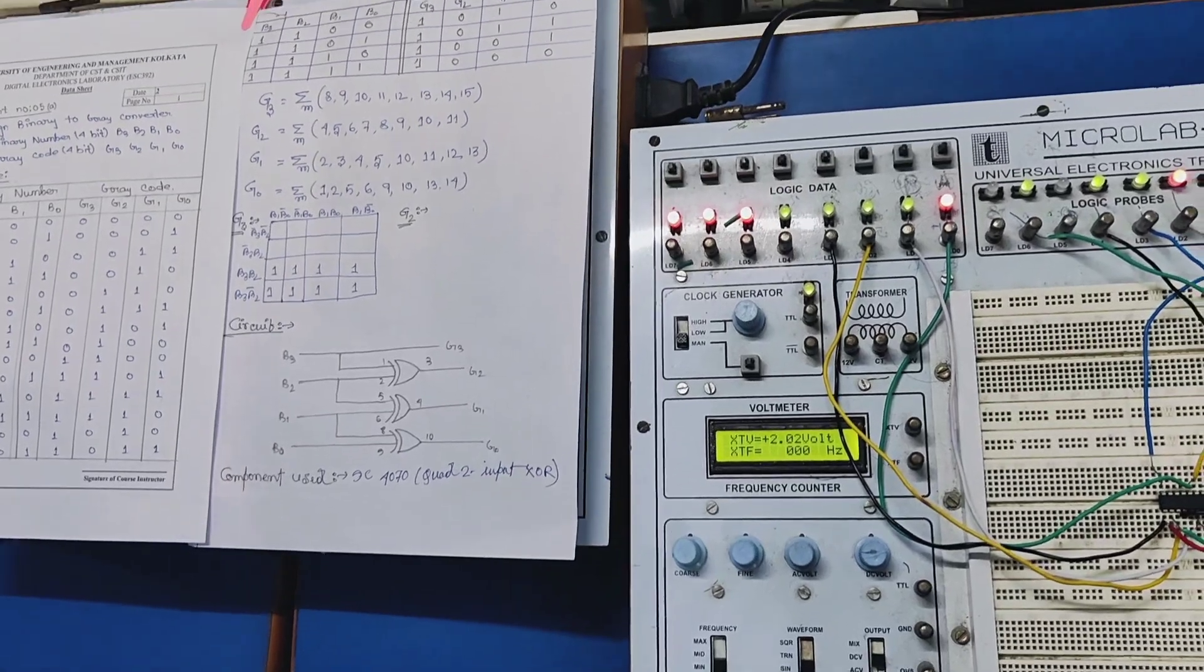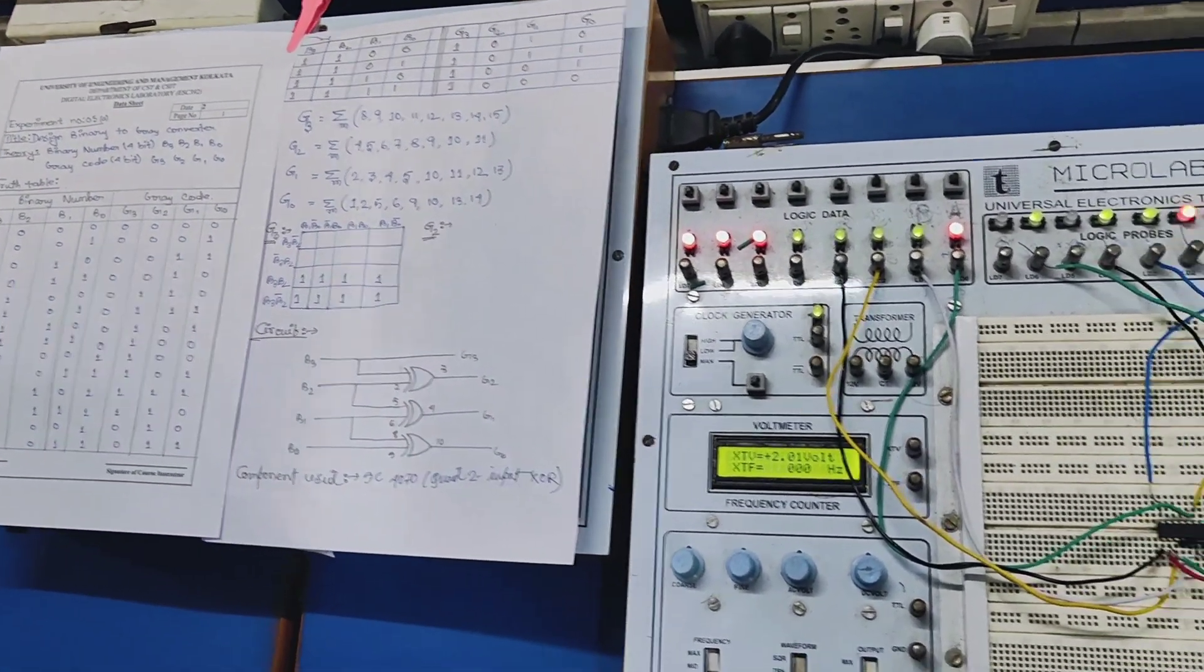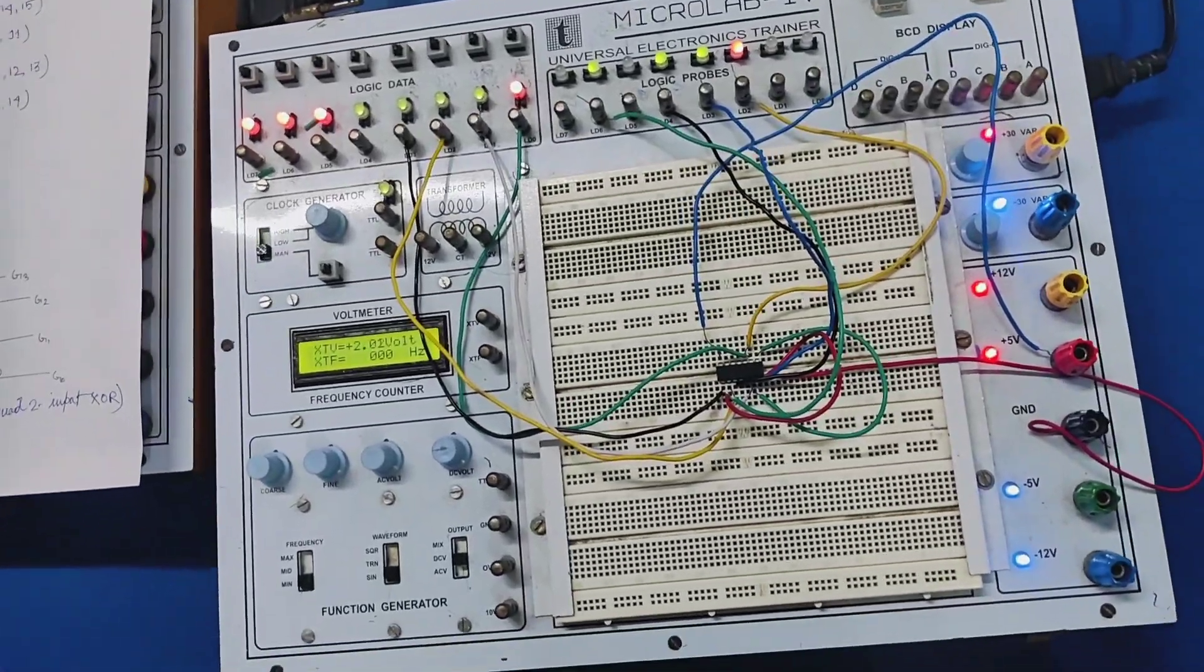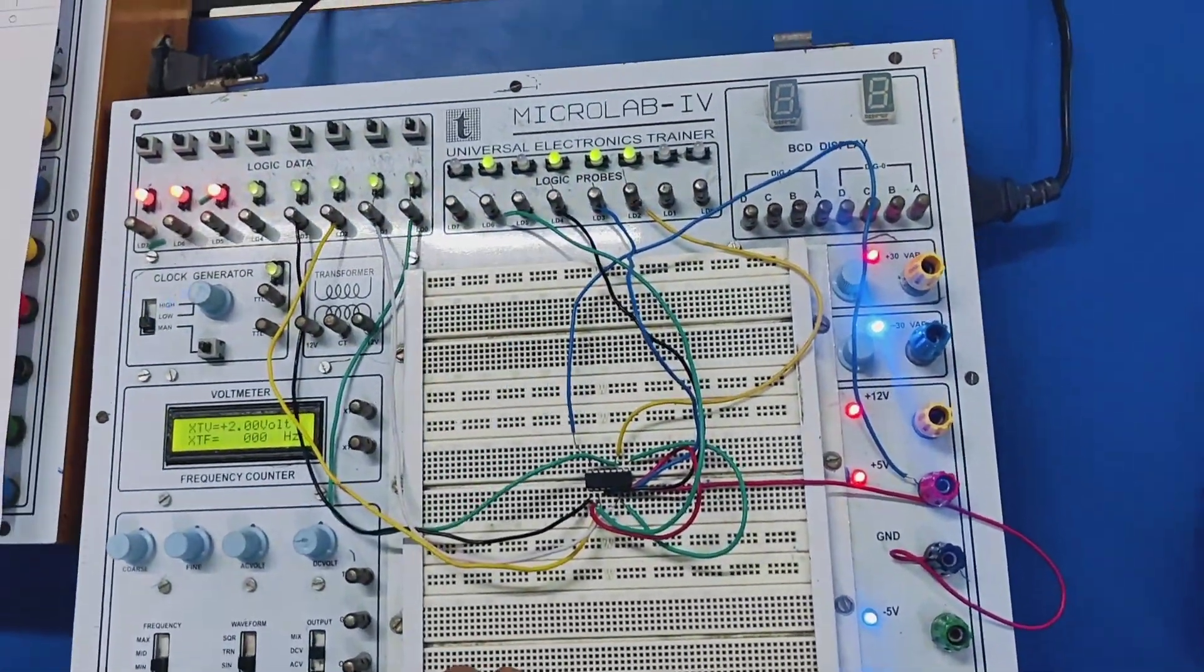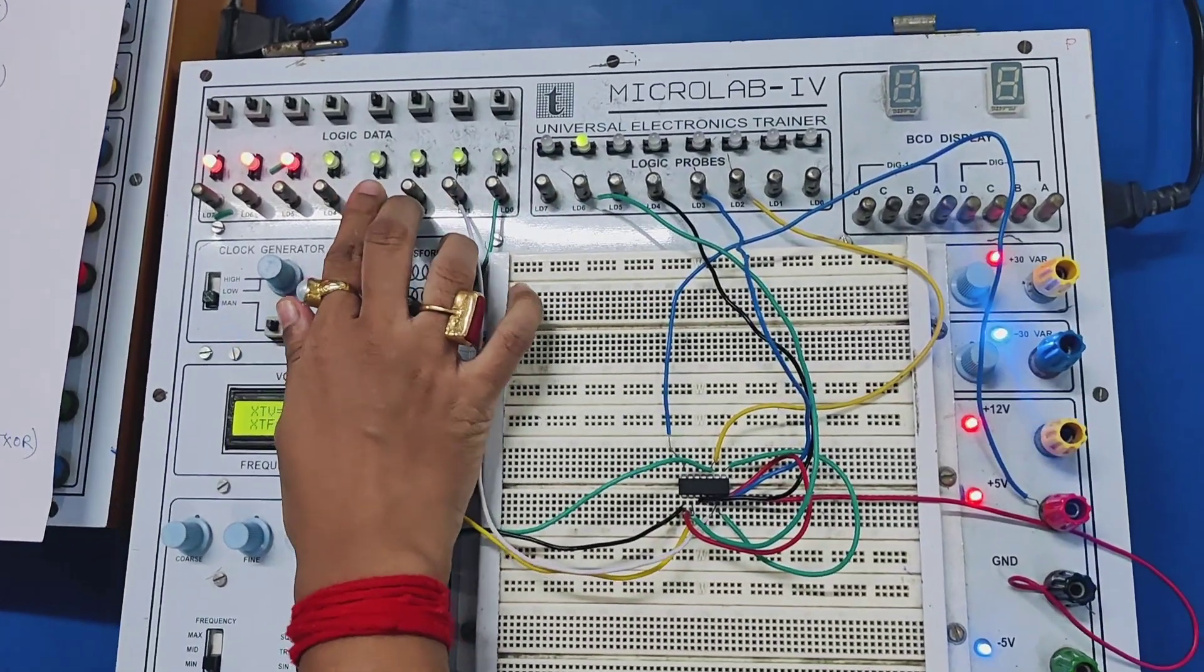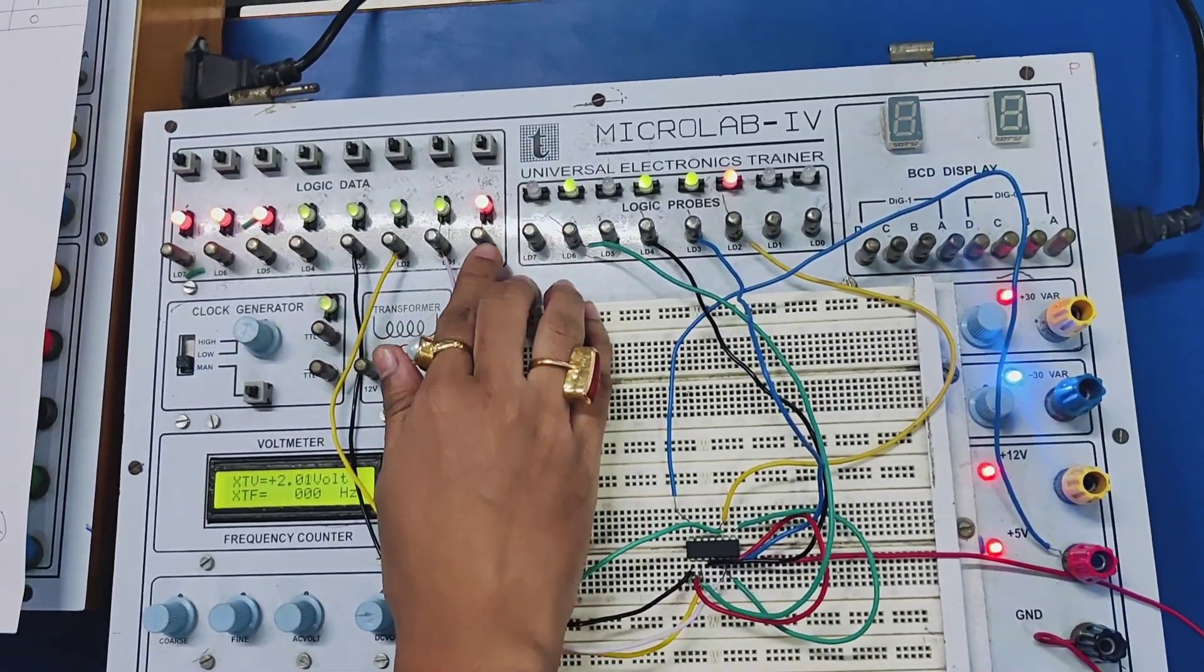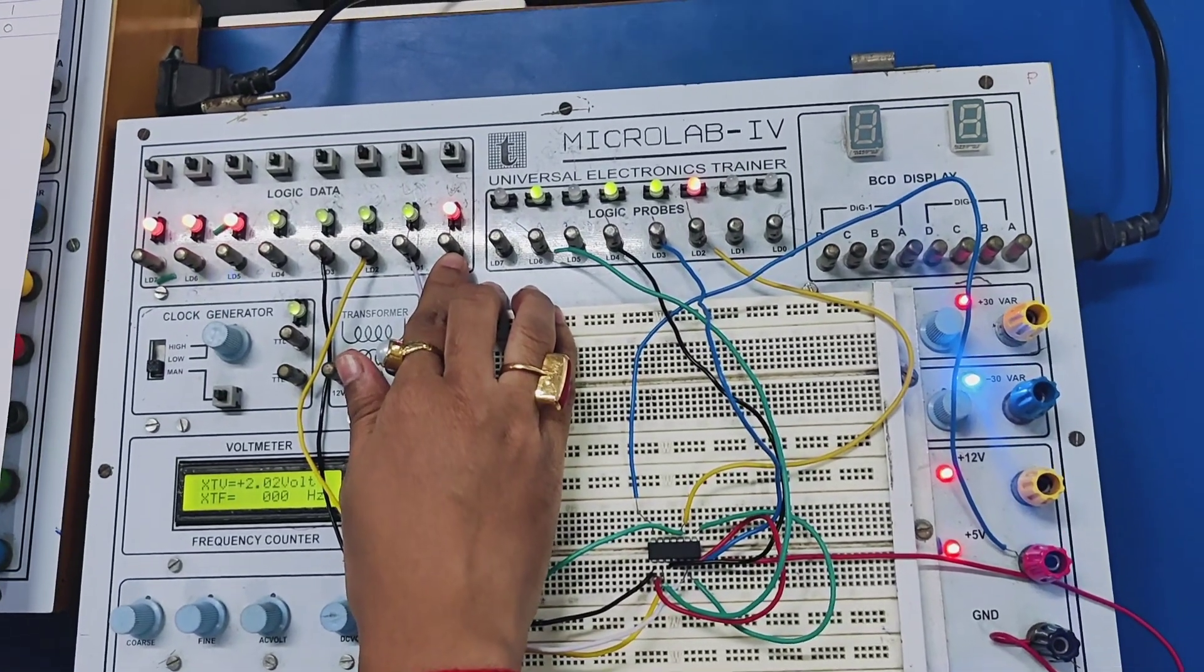From that circuit diagram we made the practical in the universal electronics channel. Now you can see the practical. If we are putting the values of the binary digit now, green indicates the 0 and red indicates the 1.